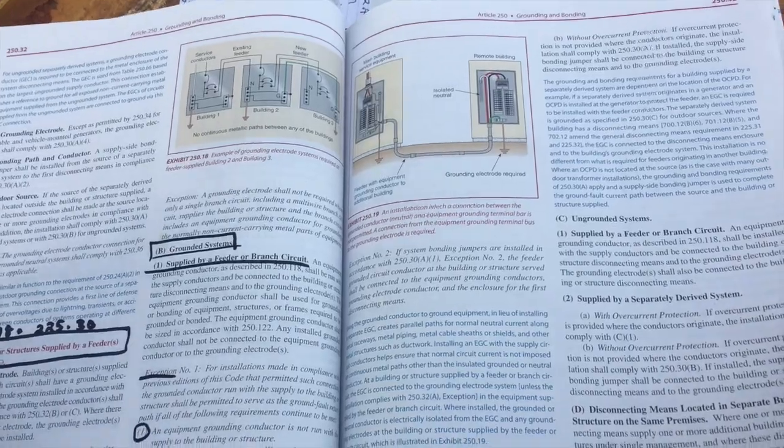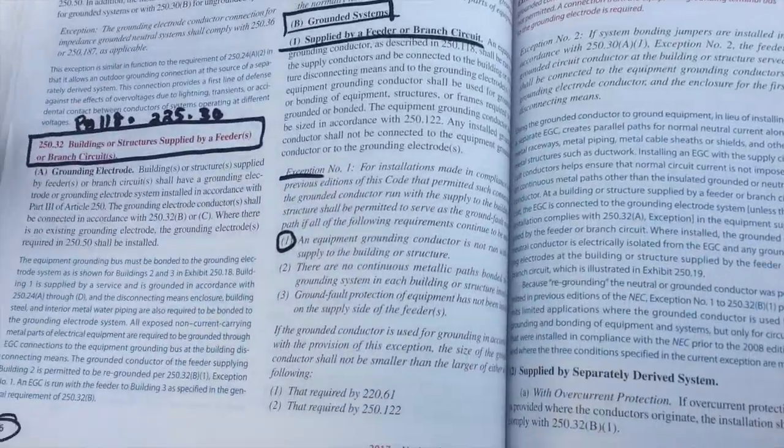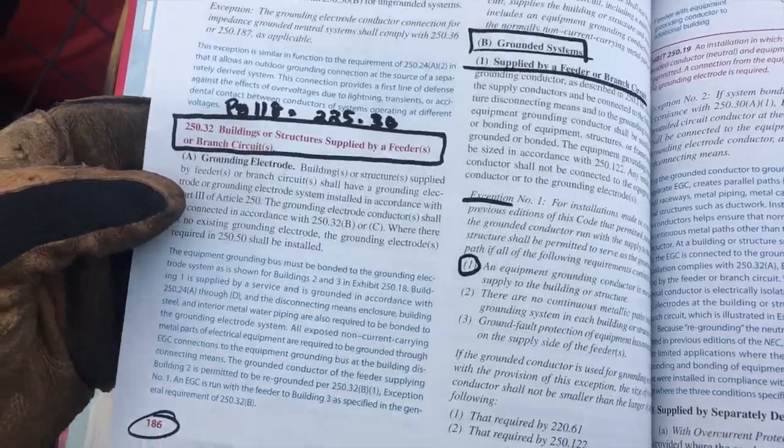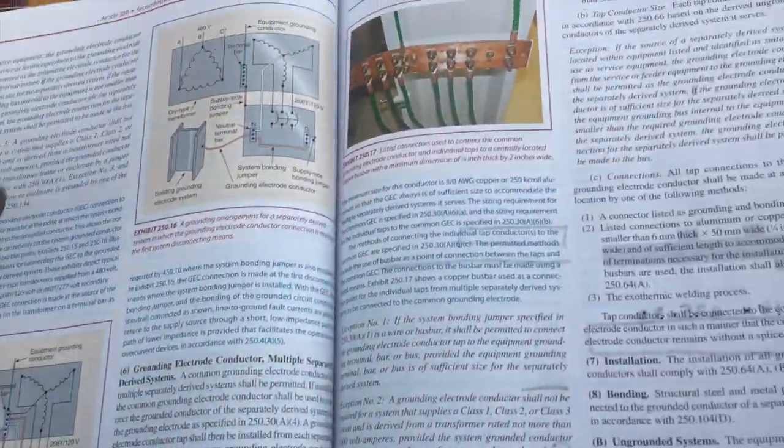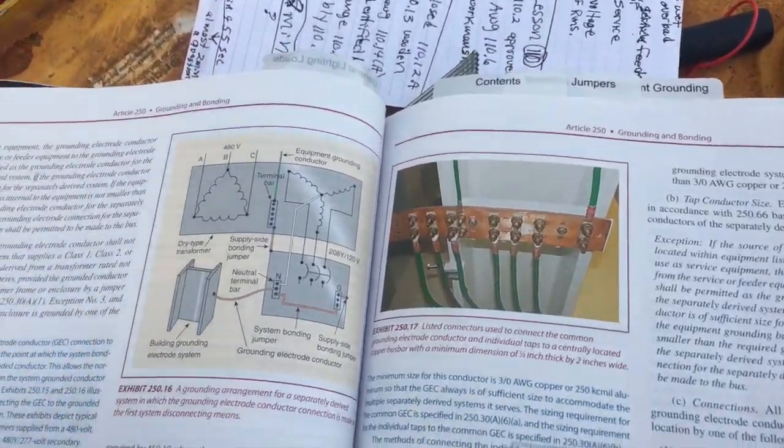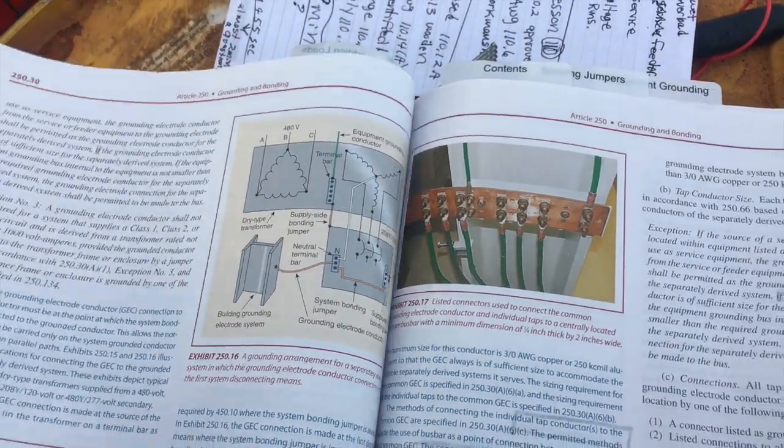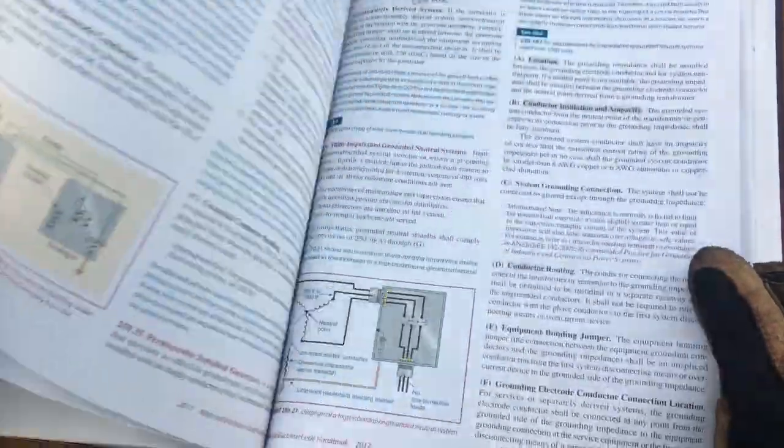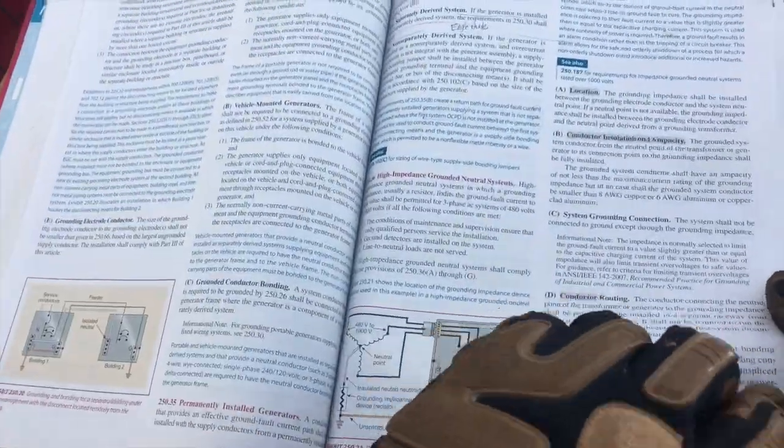Also going to be talking, looking in here for a building structure supplied by feeders and branch circuits. We're not doing that underground or overhead. Pay attention 250.32 and also how you're bonding. Most everything like I told you, there's a bonding jumper involved in all of this.